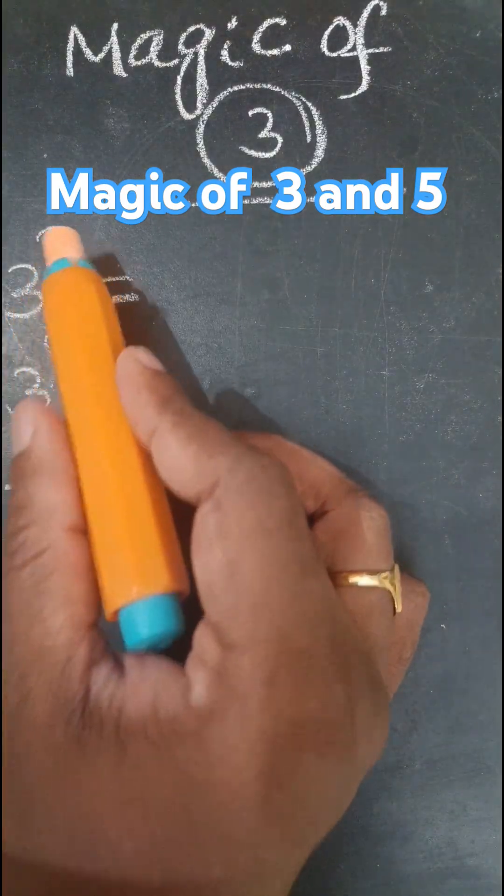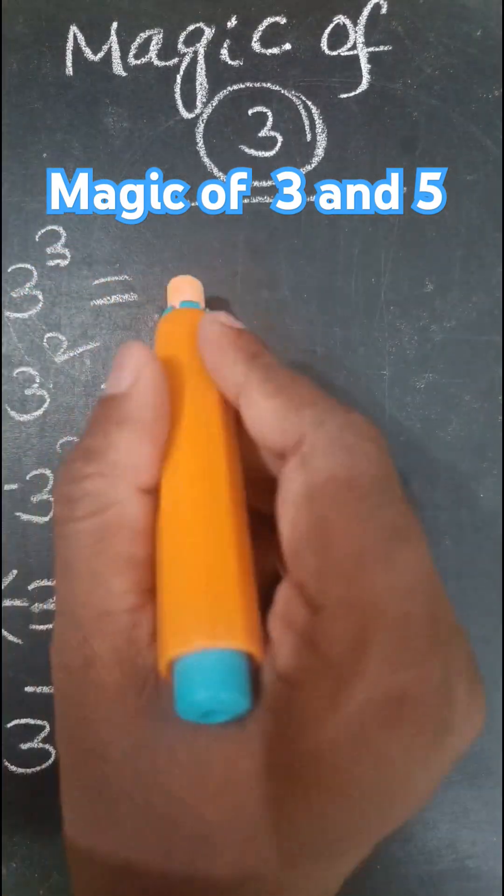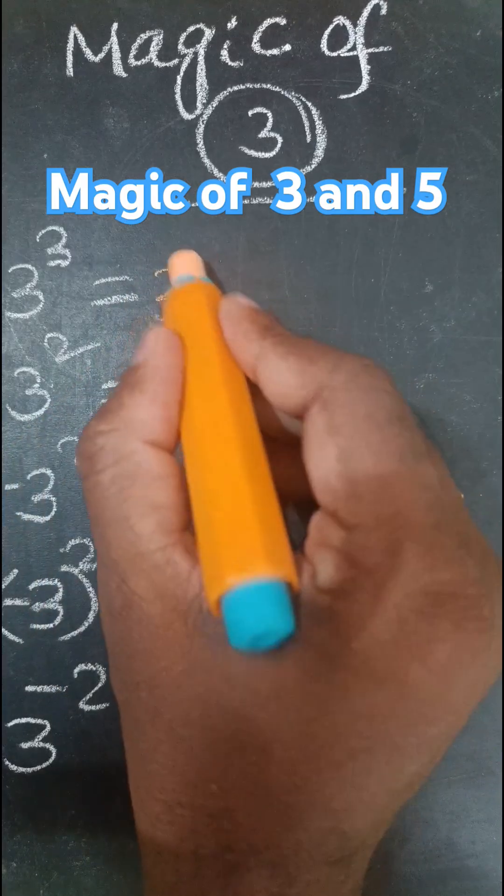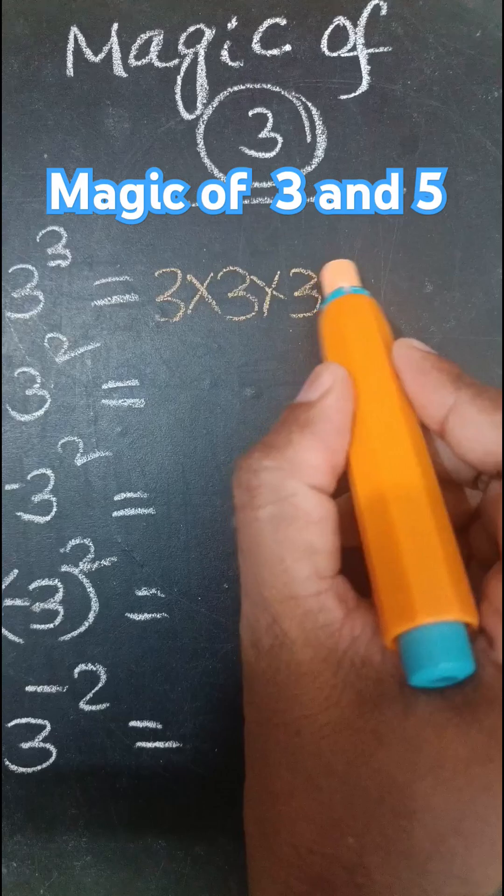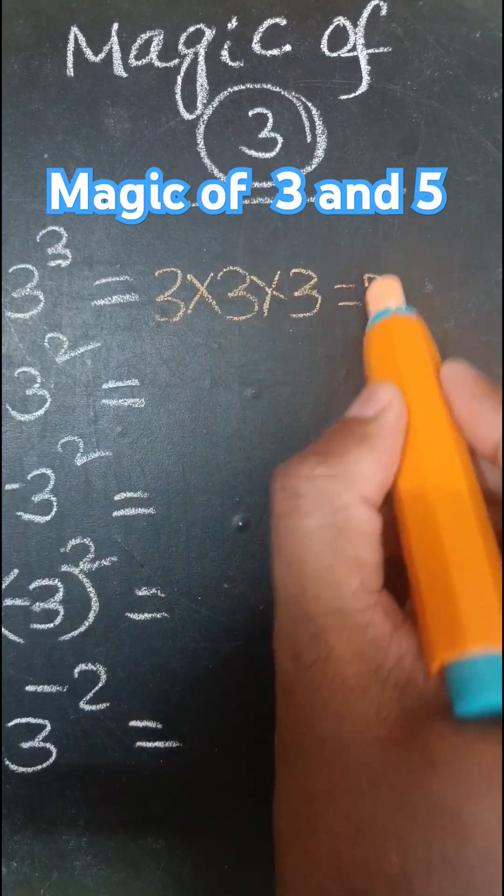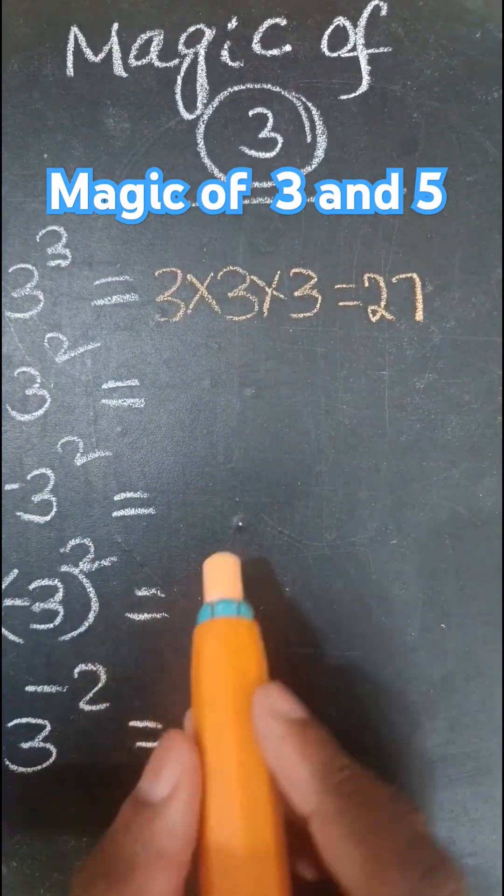First, 3 power 3. So write 3 here. 3 into 3 into 3. Power means 3 times. 3, 3 is 9, 9, 3 is 27.